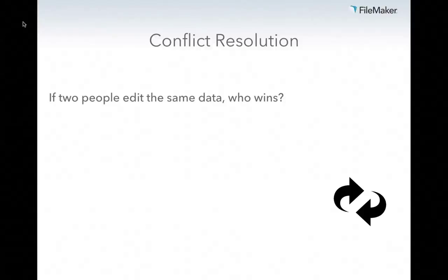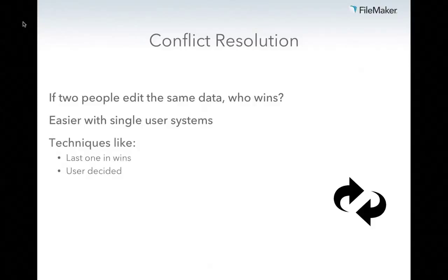The real problem with moving data is dealing with conflict resolution. If two people are editing the same record at the same time — both offline, or one on the server and one offline — when that sync happens, who wins? Who is more right than the other? This is a big problem with any syncing platform. It's easier with a single-user system; conflict doesn't really happen as much. With multiple users, you'll see techniques like 'last one in wins' — the last person to update the record wins — or 'user decided,' where you let the user choose whose version is correct.